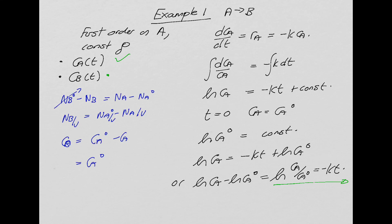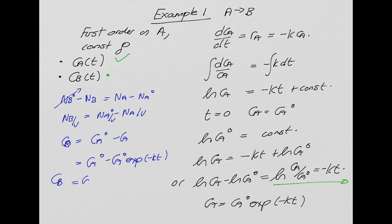Looking at our equation for CA and rewriting it, CA = CA0·exp(−kt). Substituting in, CB = CA0 − CA0·exp(−kt), which simplifies to CB = CA0·(1 − exp(−kt)).